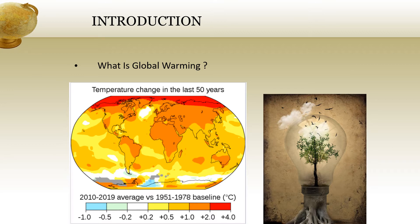The intergovernmental panel on climate change concluded that human influence on climate has been the dominant cause of observed warming since the mid 20th century. These findings have been recognized by the National Science Academies of major nations and are not disputed by any scientific body of national or international standing. The largest human influence has been the emission of greenhouse gases, with over 90% of the impact from carbon dioxide and methane. Fossil fuel burning is the principal source of these gases, with agricultural emissions and deforestation also playing significant roles.